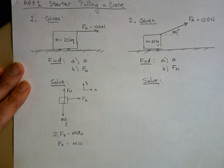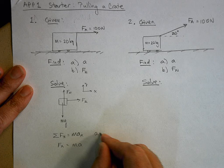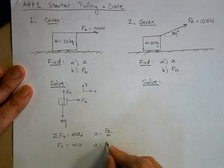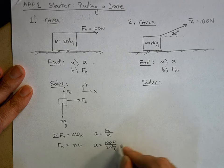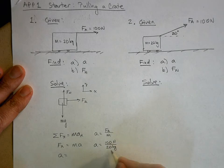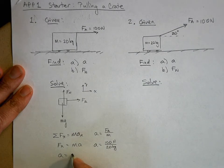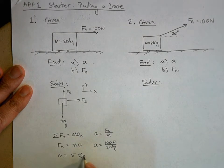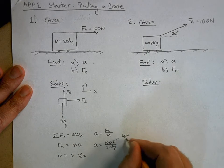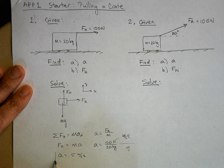The acceleration is equal to the applied force divided by the mass. Plugging in values: 100 newtons divided by 20 kilograms. 100 divided by 20 is 5. A newton divided by a kilogram is a meter per second squared — remember that a newton is defined to be a kilogram meter per second squared. So if I divide that by a kilogram, kilograms cancel leaving meters per second squared. That's my answer for part A.